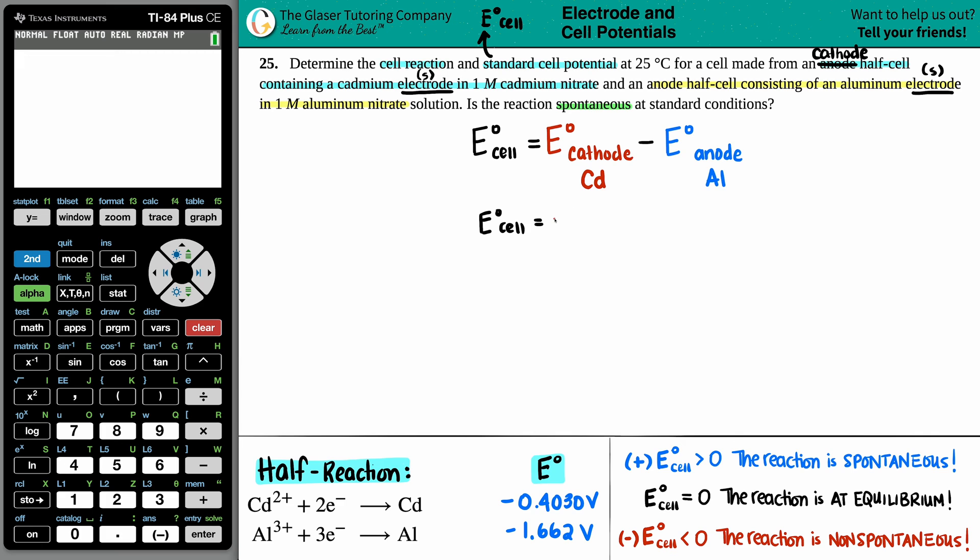So let's keep going. The cathode value is negative 0.4030 minus the anode, which is the aluminum, which is the negative 1.662. And let's see what we get. E°cell equals negative 0.4030 minus a negative 1.662. And I'm going to press enter. And there I go. I have 1.259 and that unit is volts. So one third of the problem, we're already done. We've found out the standard cell potential.